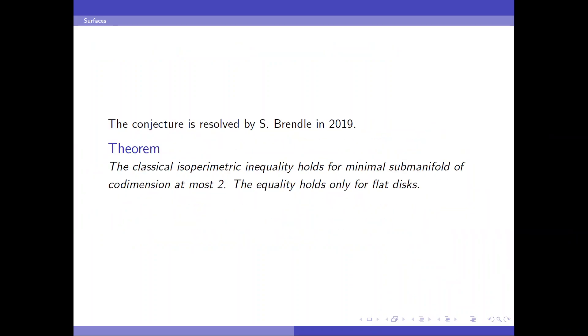However, the conjecture is resolved by Simon Brendle in 2019. So the classical isoperimetric inequality holds for minimal submanifolds of codimension at most two. So not only minimal surfaces in R3, Brendle can treat a submanifold of arbitrary dimension and codimension at most two. And the equality holds only for flat disks. So let me stop here for my first lecture.